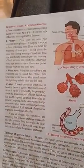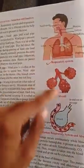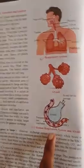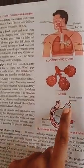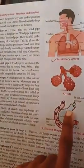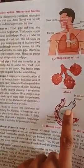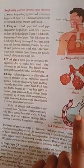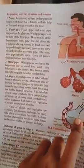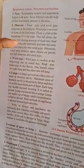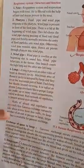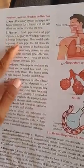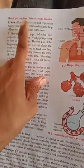In the human respiratory system, air passes in and out through the alveoli. Oxygen is transported to the capillaries. The different parts are: nose, pharynx, windpipe, lungs, and the diaphragm. These are the structures of the respiratory system.